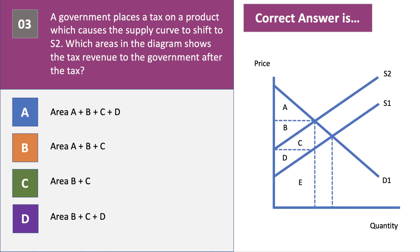Here's question 3. A government places a tax on a product which causes the supply curve to shift in our diagram from S1 to S2. Which area in the diagram shows the tax revenue to the government after the tax? Please press the pause button and have a go at question 3.